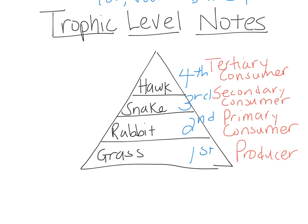A very common question on my exam or even the AP exam will give you a pyramid with just the organisms — grass, rabbit, snake, and hawk — and ask which organism is the secondary consumer. You need to not be confused and say it's the rabbit. The rabbit is the second level, but it's not the secondary consumer. The secondary consumer is at the third level. The word tertiary means third, and the tertiary consumer is actually at the fourth level. Make sure you do not get those things mixed up.